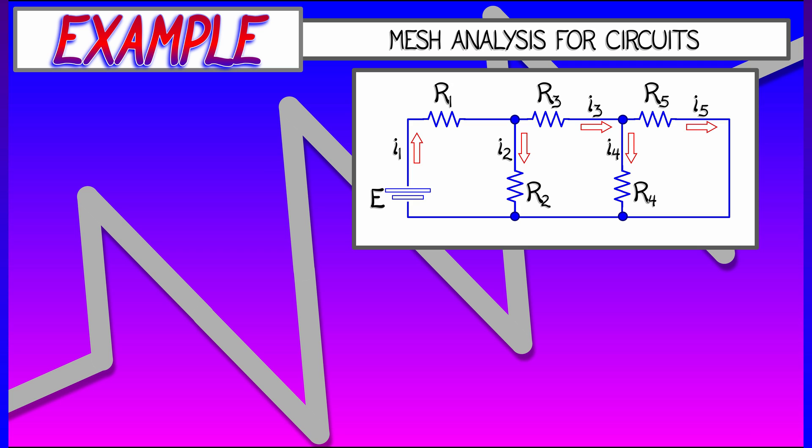You have a bunch of wires strung together with resistances or resistors stuck inside of them. These have resistances R1, R2, up through R5.